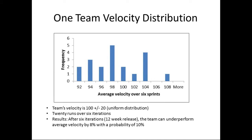The question is, how bad can it get? Monte Carlo shows there is a 10% chance we will be 8% below. Reading the chart: at 92 points, 2 out of 20 examples result in an average velocity of 92. Two out of 20 is 10% — that's where we get the probability. And 92 is 8% less than 100. So we go to the product owner and say there's a 10% chance we're going to miss scope by 8% — the bottom 8% of the backlog is not going to get done.